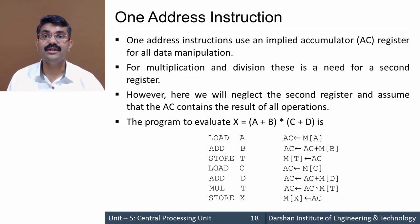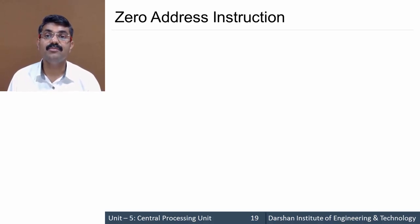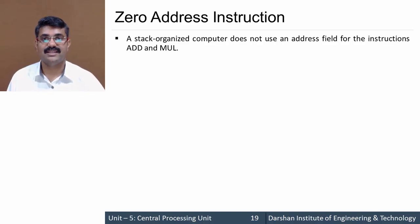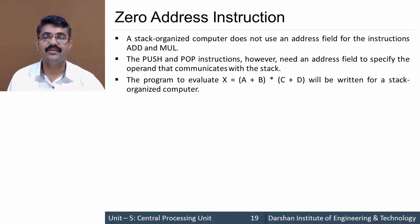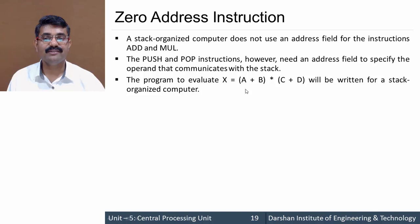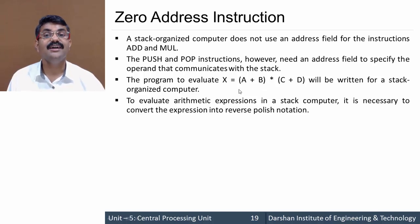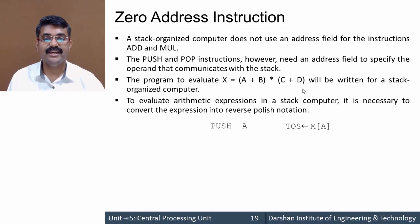Now let's see zero address instruction. You might wonder — if we don't provide an operand, how does it perform operations? For zero address instruction we use a stack, and there are no address operands in instructions like ADD or MUL. We use PUSH and POP operations along with ADD and MUL. To evaluate the same expression using a stack, we first convert the expression to Reverse Polish Notation (RPN).